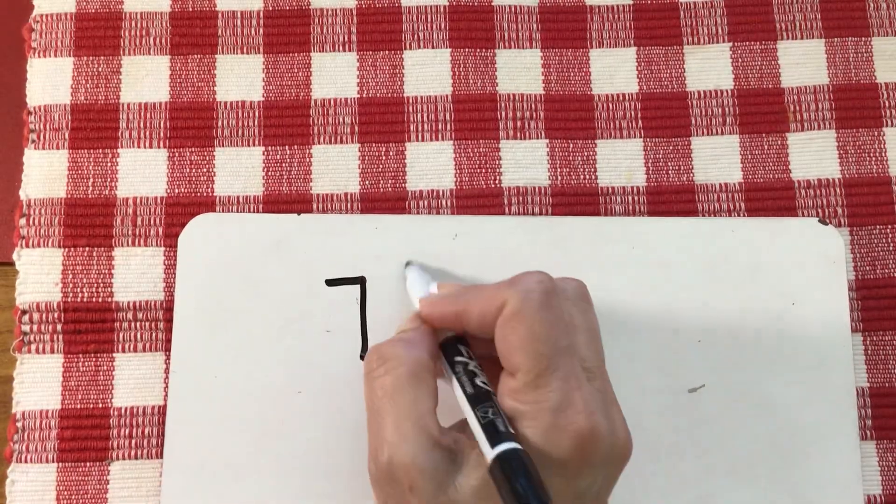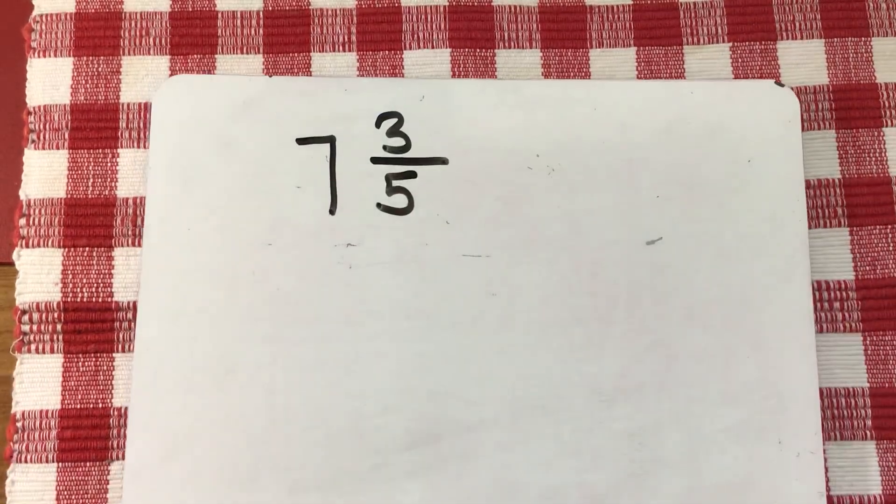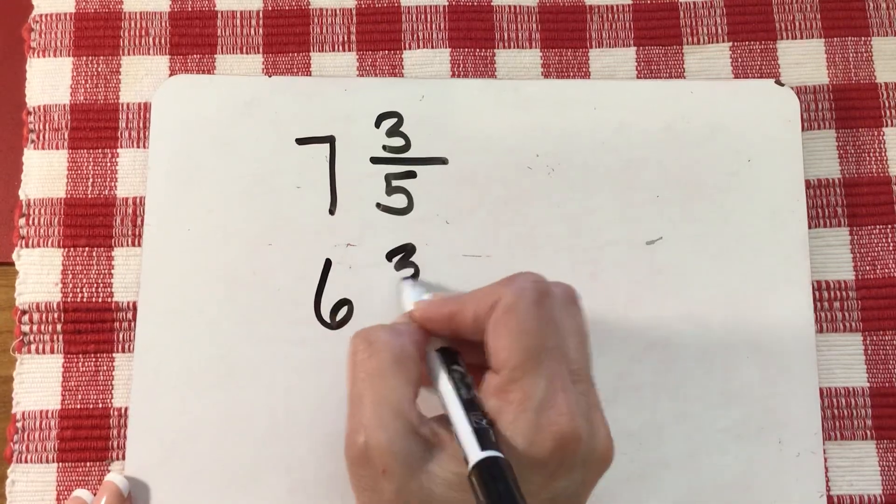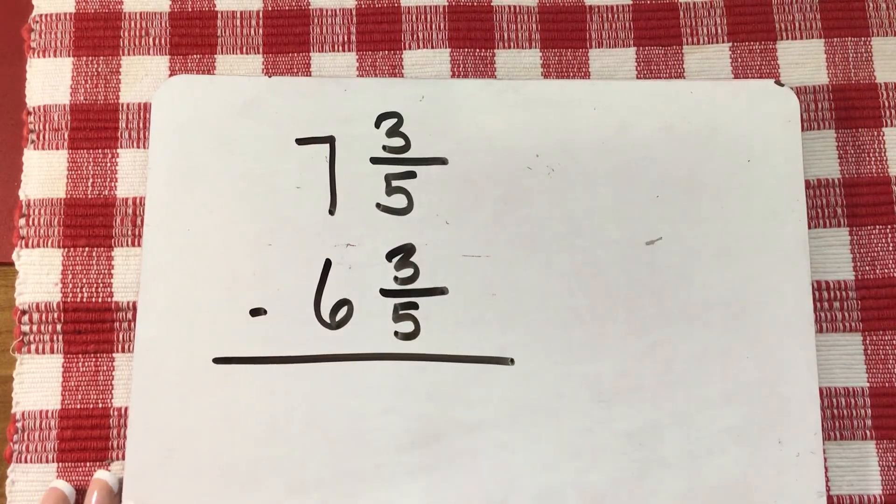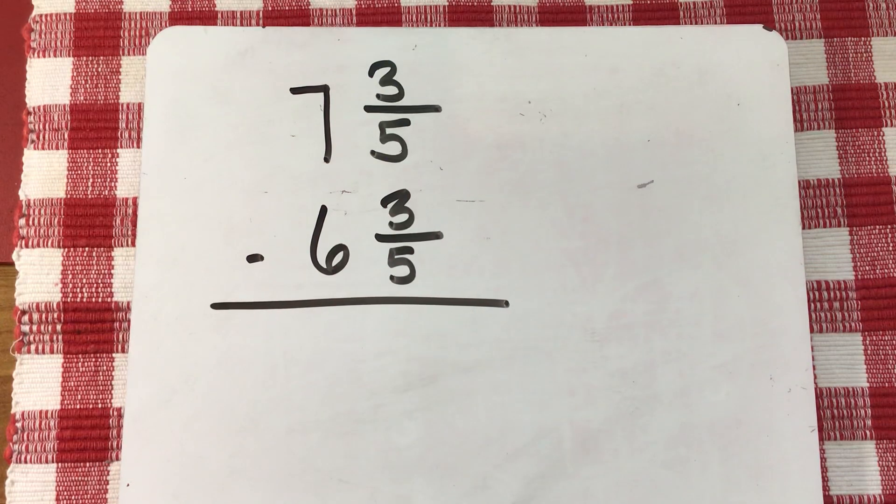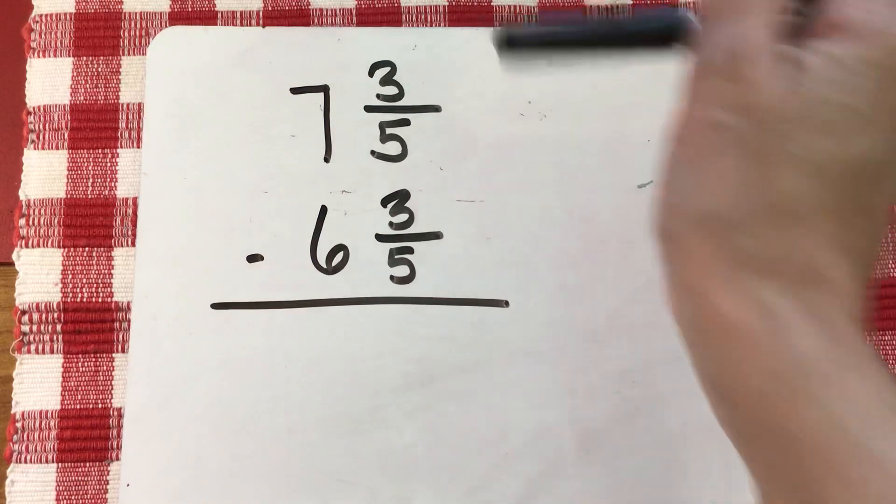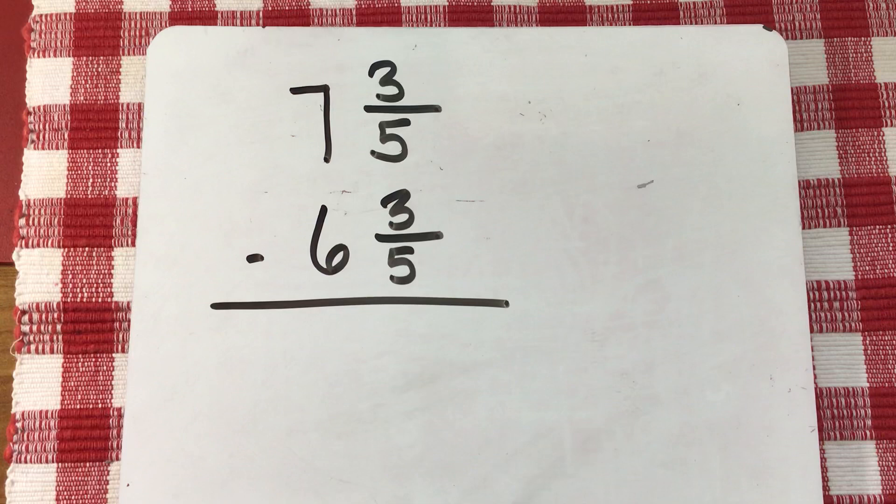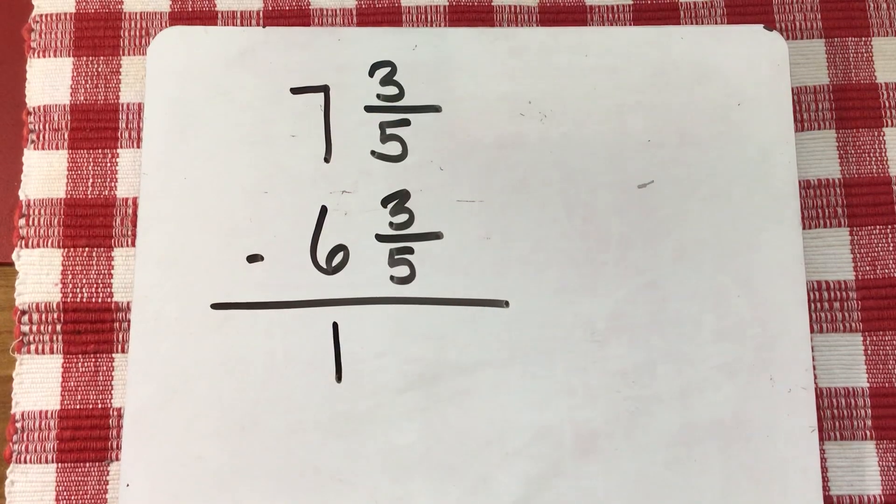Let's do another subtraction problem to finish us off here. Seven and three fifths, and you're going to subtract six and three fifths. Don't overthink it guys, you're subtracting. Go ahead and pause. Hopefully you're back. If I have three fifths and I'm subtracting three fifths, well I end up with zero. So you don't even have to write anything down here. All I have to do is worry about my whole numbers. Seven take away six is one. That's it, that's your answer.